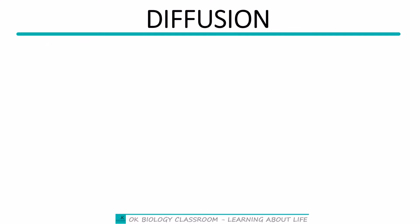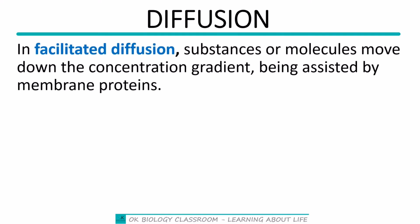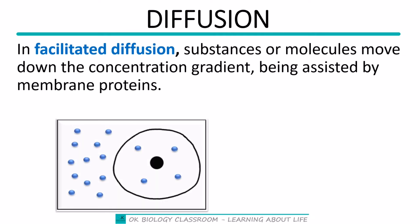After simple diffusion, let's move on to facilitated diffusion. In both cases, substances or molecules move down the concentration gradient — from the region of higher concentration to the region of lower concentration. But in facilitated diffusion, these substances or molecules are aided by membrane proteins. I have an image here to help us understand it.